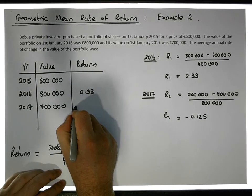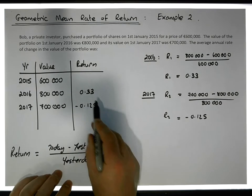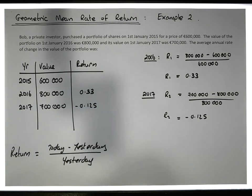That's the return we had: minus 0.125, which is a 12 and a half percent decrease in the value of the portfolio between 2016 and 2017. What we're interested in is the average.